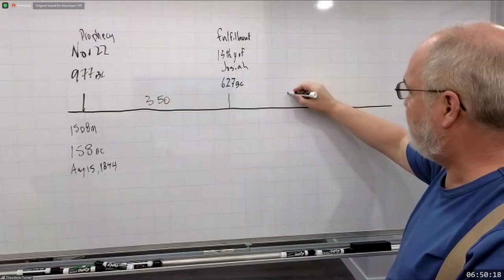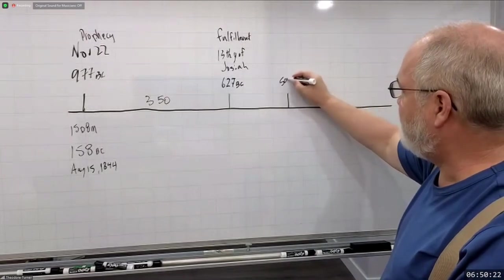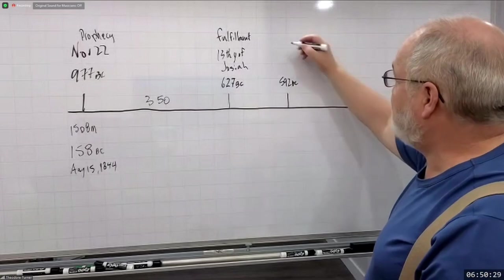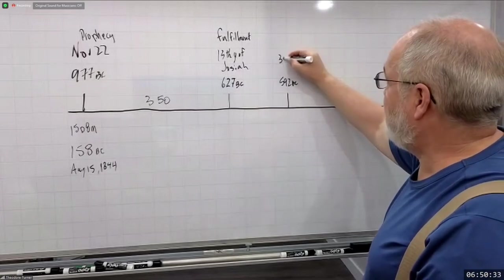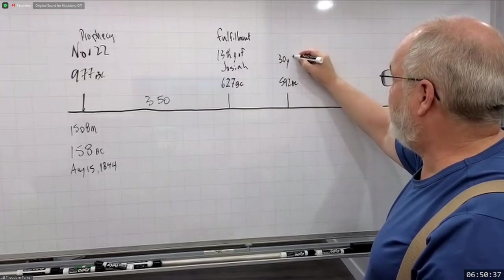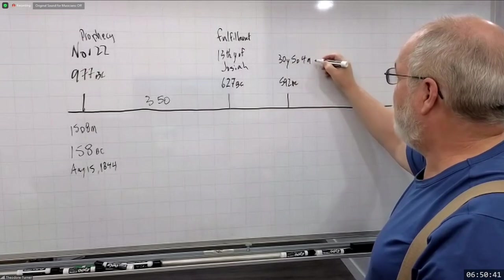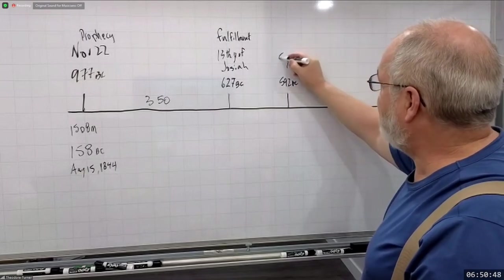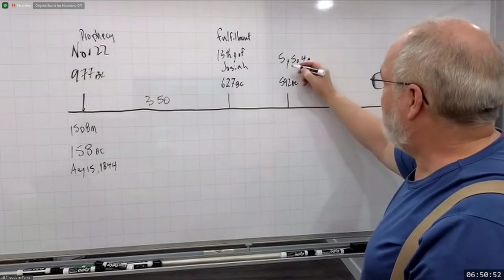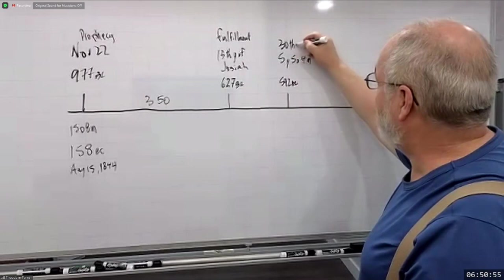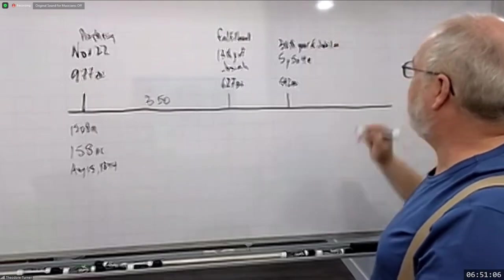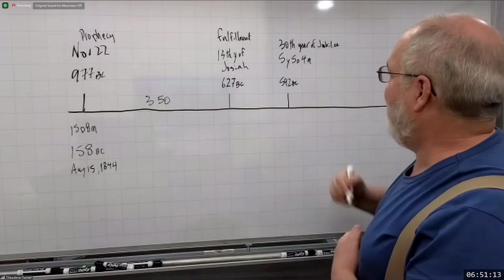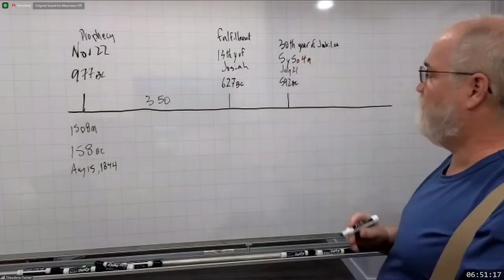Over here you're going to have Ezekiel, not just Josiah. So this is in 592 BC, and Ezekiel is going to be given this vision in the 30th year, on the 5th day of the 4th month. It's in the 5th year of the captivity of Jehoiachin, but it's also the 30th year of the Jubilee cycle. So it's the 30th year of the Jubilee cycle, the 5th year of Jehoiachin's captivity, the 5th day of the 4th month — July 21st.